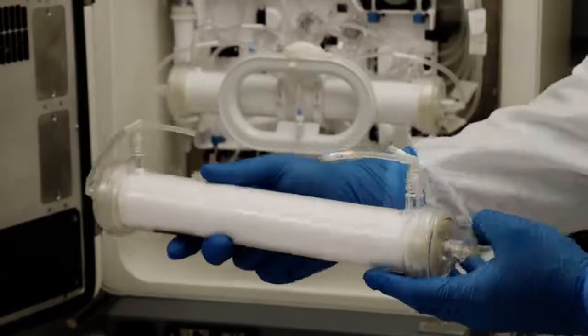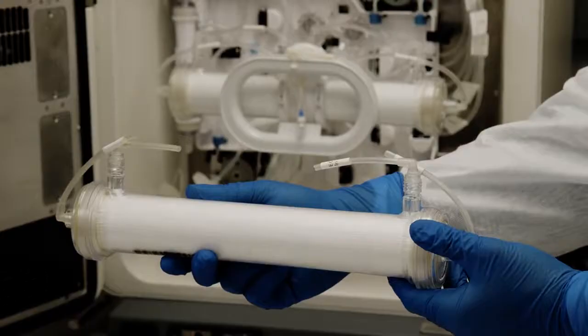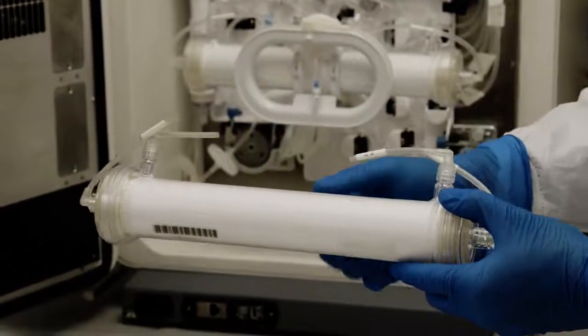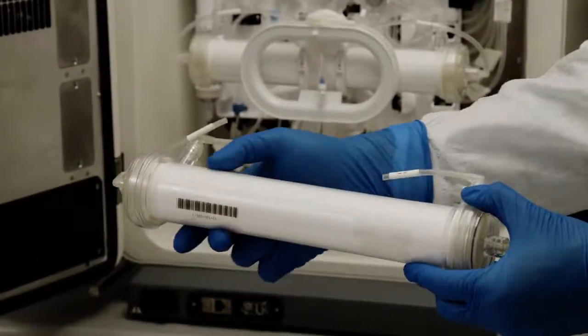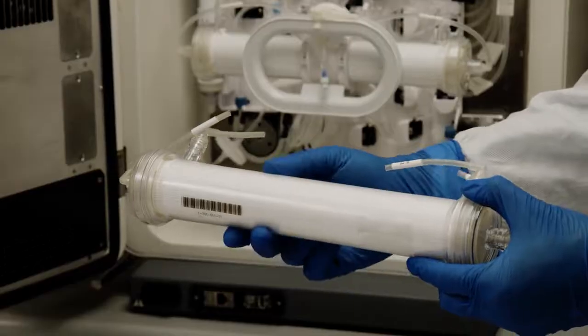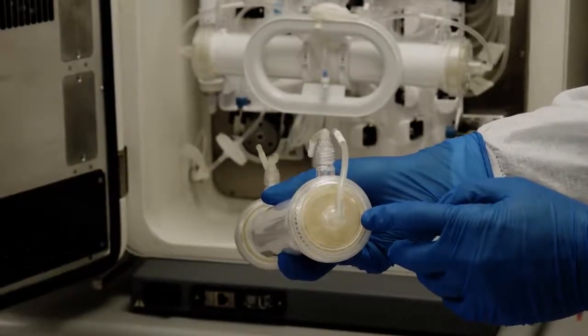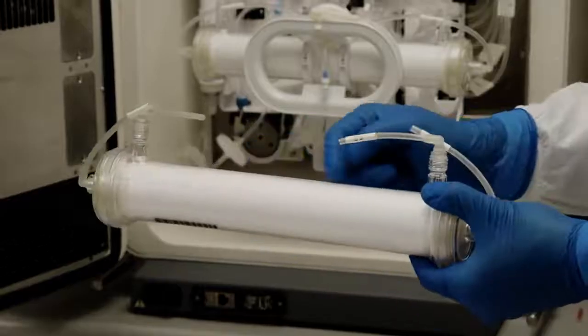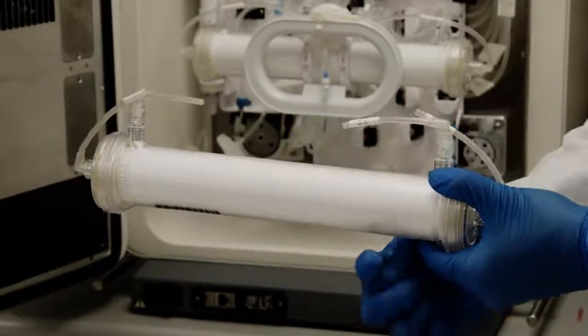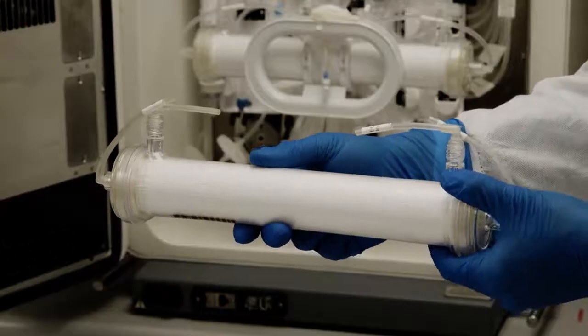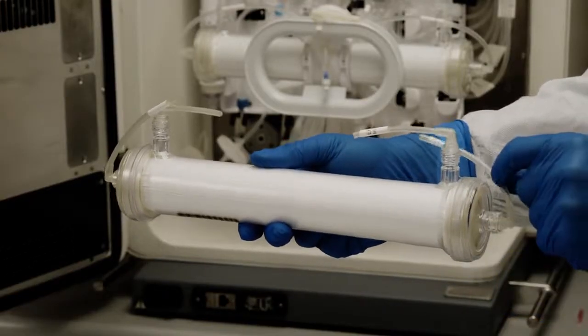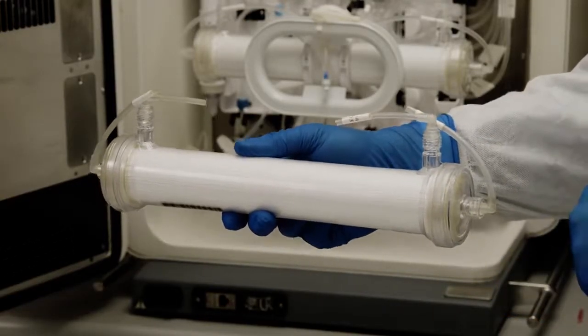Think of it like a Pringles can turned on its side, packed with 11,500 semi-permeable fibers or straws. There are two separate environments here: an IC or intracapillary space inside those hollow fibers, and an EC or extracapillary space surrounding those hollow fibers. This enables us to use two different reagents and individually control those fluid flow rates as well.